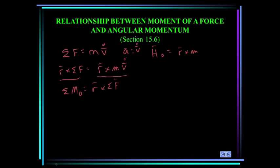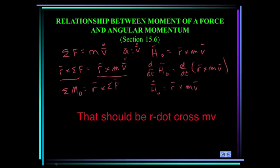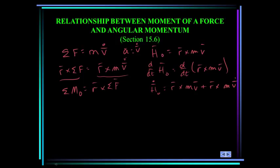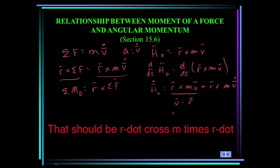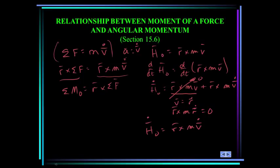Angular momentum is R cross MV. Taking the derivative of both sides with respect to time, the left side becomes H-dot, and the derivative of the cross product comes out to be R-dot cross MV plus R cross MV-dot. But V-dot is just equal to R-dot, so I can rewrite the first term as R-dot cross MR-dot. A vector cross product with itself equals zero, so that term is zero. Therefore, the time rate of change of angular momentum equals R cross MV-dot, which connects Newton's equation of motion to the angular momentum equation.